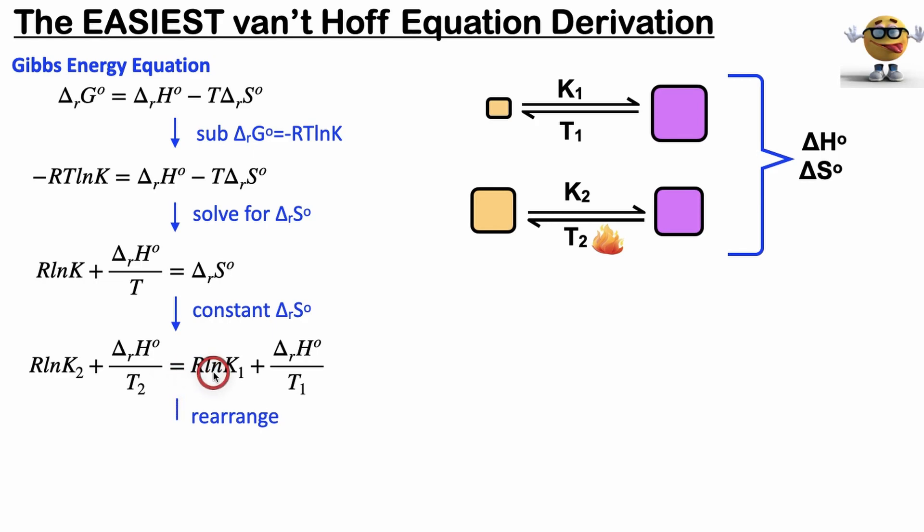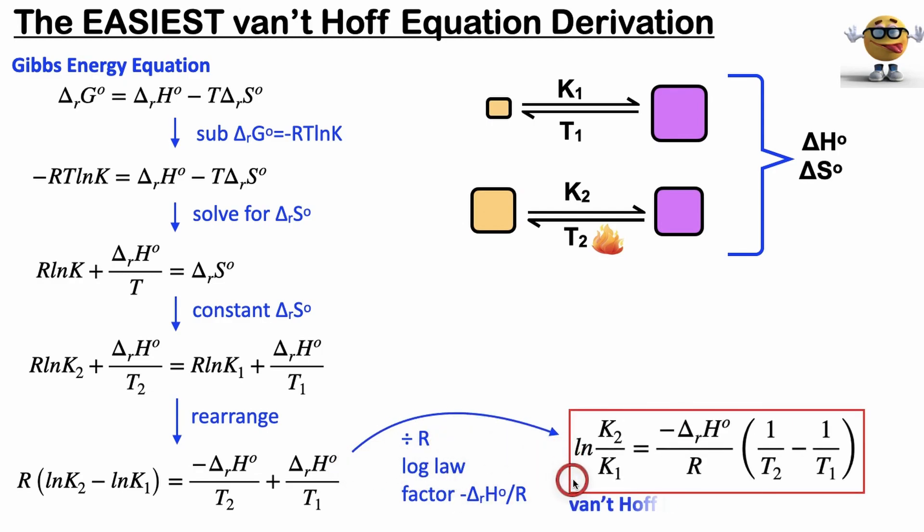So we're going to move everything with the equilibrium constant to the left, everything with the enthalpy terms to the right. And now we're going to divide by R, merge this into one term using a log law, and then factor out this enthalpy change, negative enthalpy change divided by R. If we do that, we're left with the Van't Hoff equation in its integrated form in all its glory.